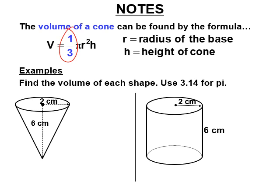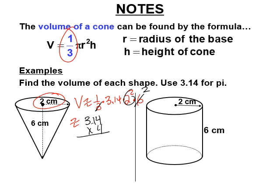If the volume of the cylinder is pi r squared h and three cones fit in it, the formula for the volume of a cone is one third of that — one third pi r squared h. So for our example, we use approximately one third times 3.14 times the radius squared, which is 2 squared equals 4, times the height which is 6. We can cancel the 3 with the 6 to make it 2, and 3.14 times 4 gives us the area of the base.